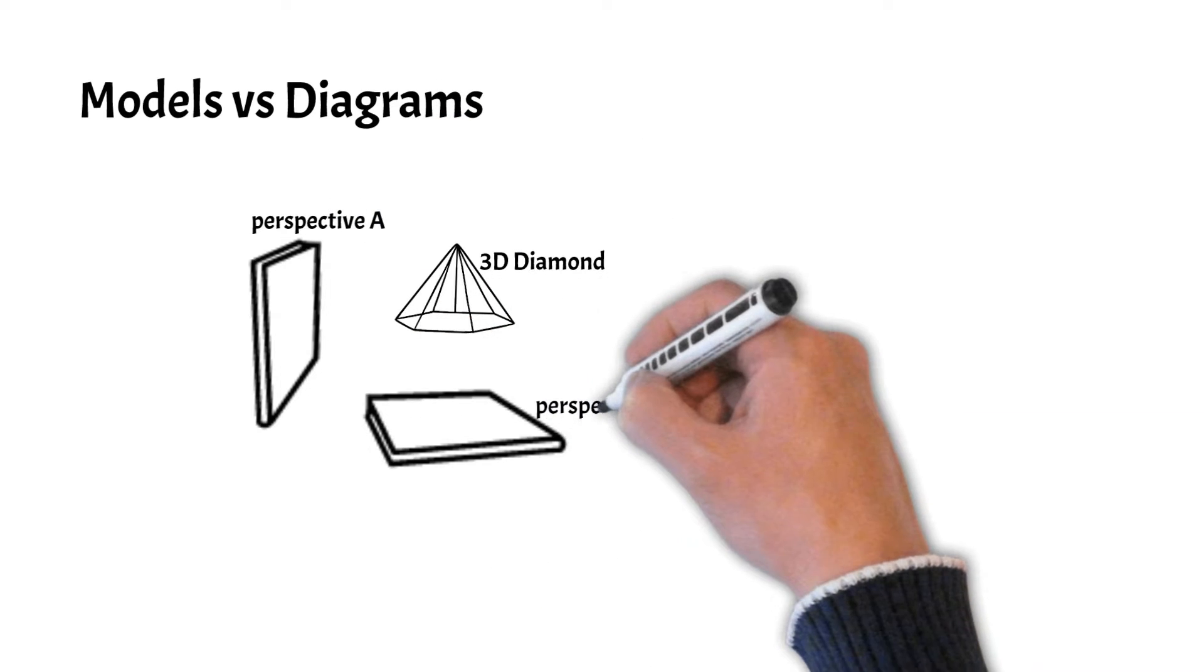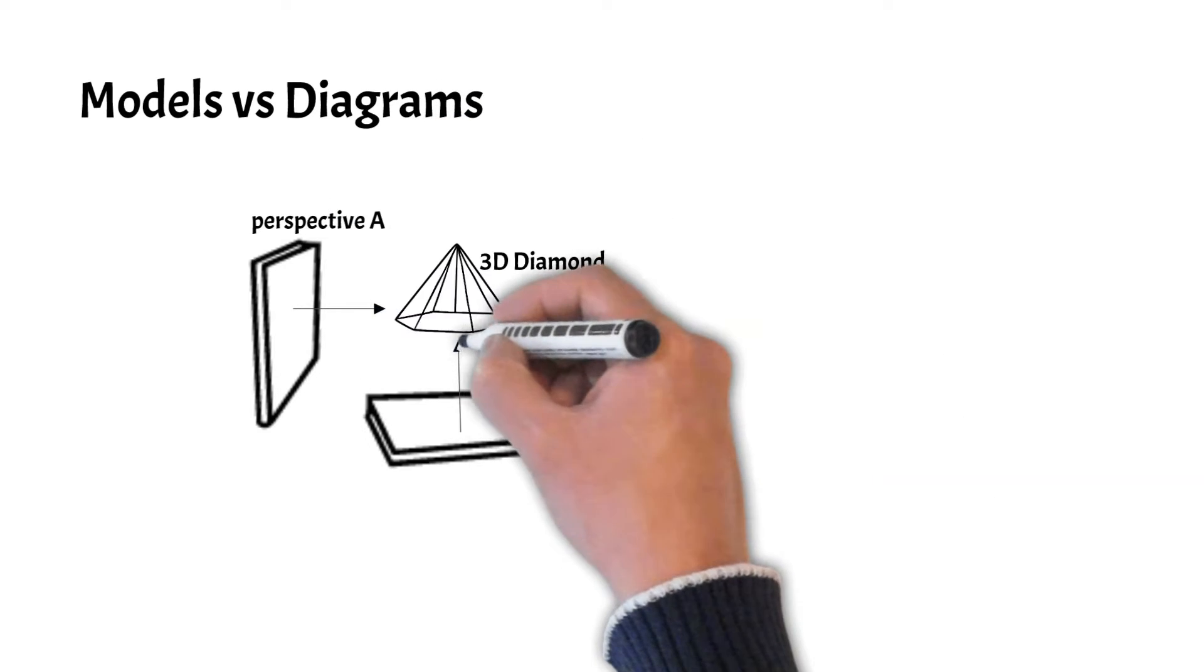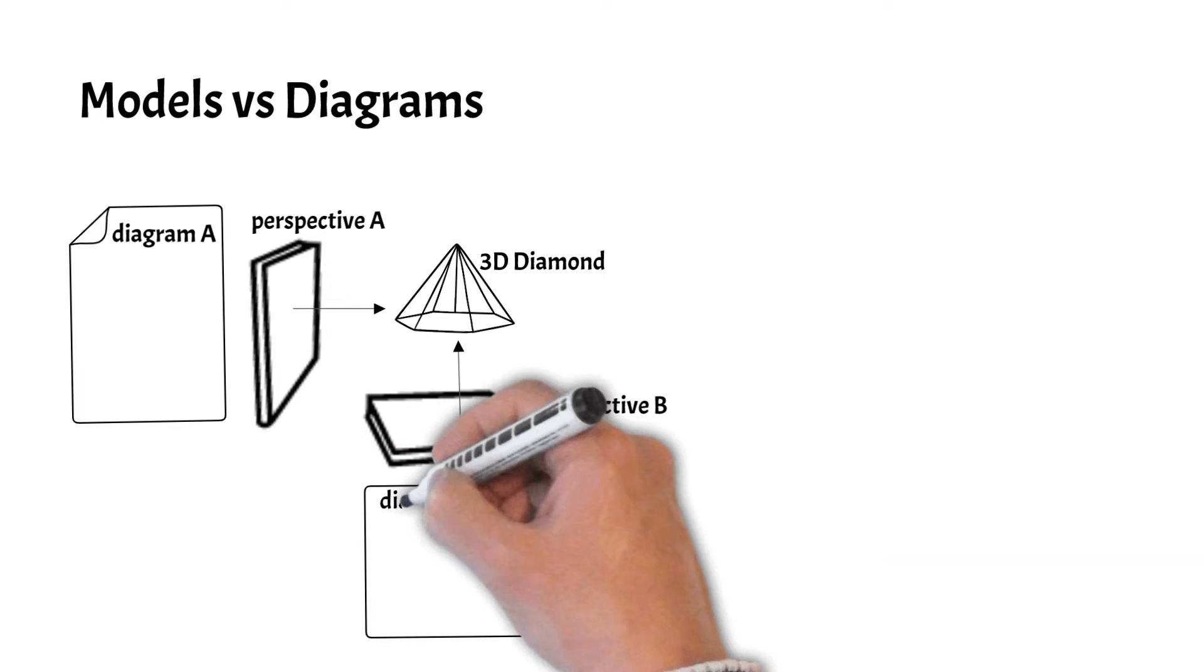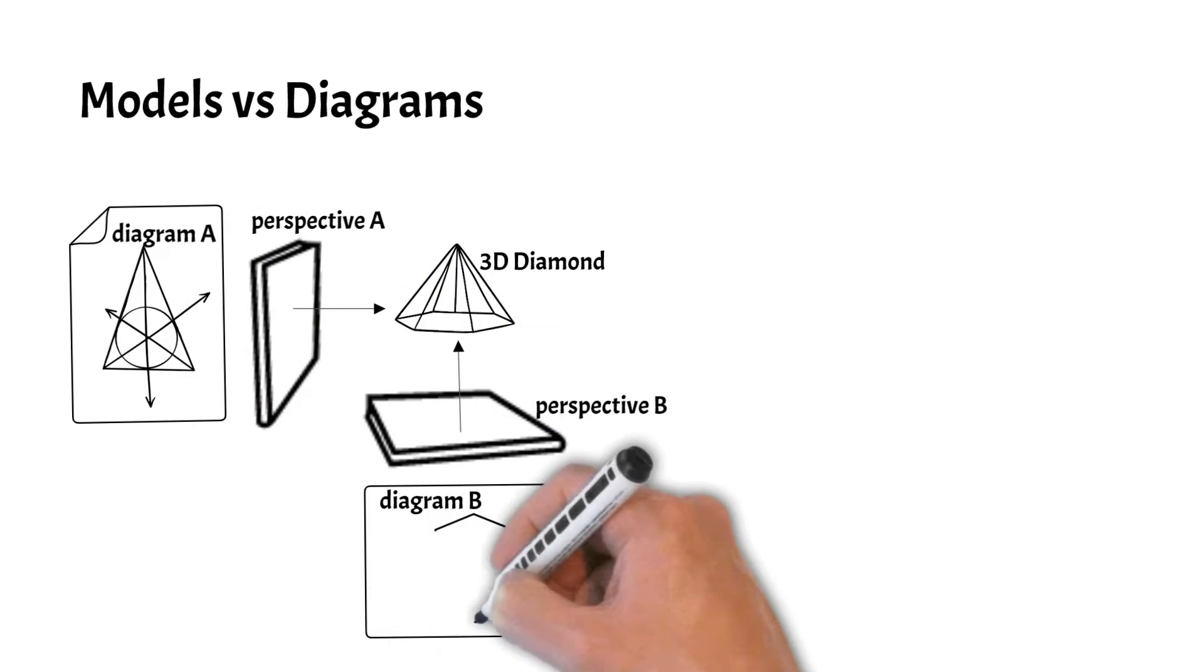Engineers would take the three-dimensional diamond and then take snapshots from different angles of the diamond. The data from the snapshots, or perspectives, would be rendered in two dimensions on a diagram. The sum of the diagrams would give the engineer the information needed to cut the diamond to spec.